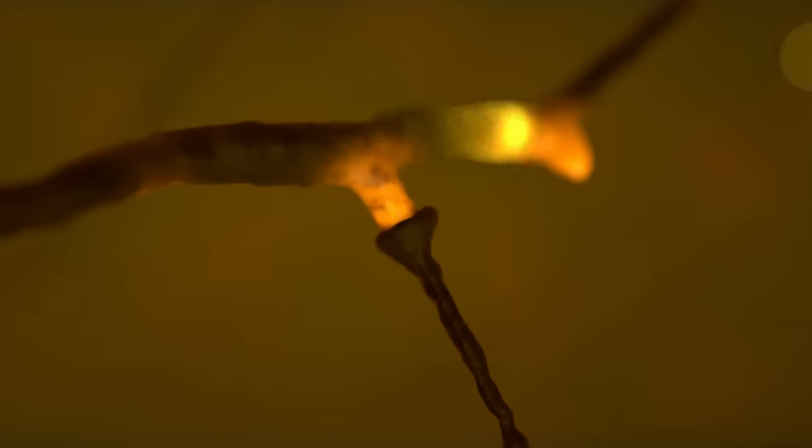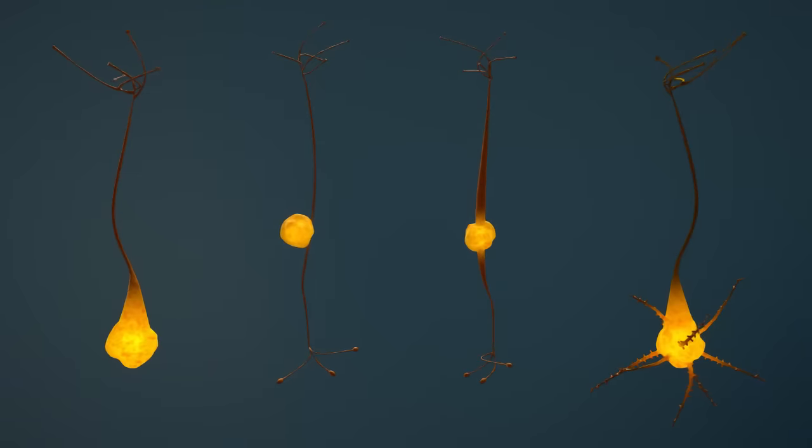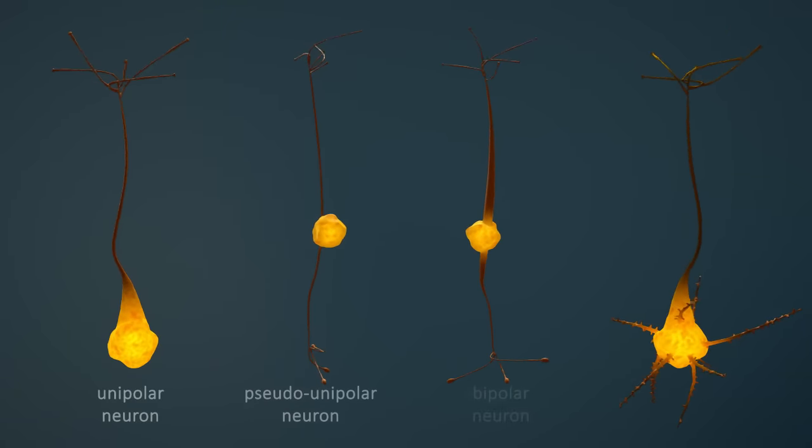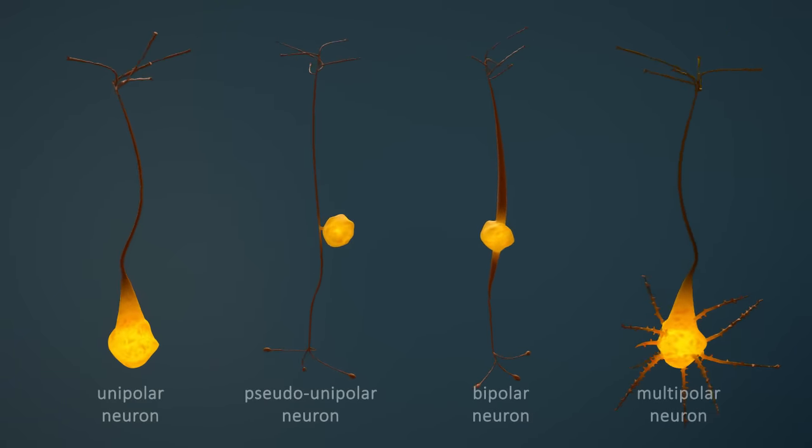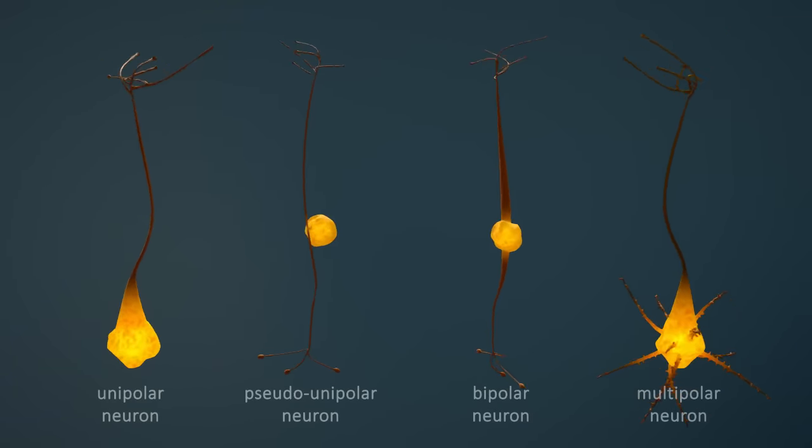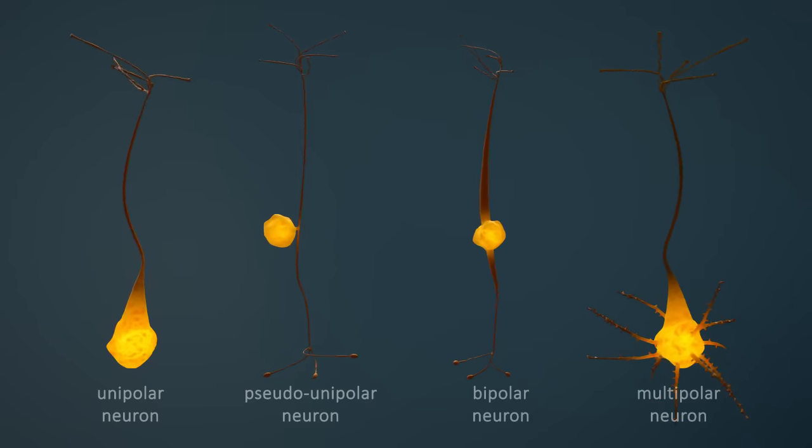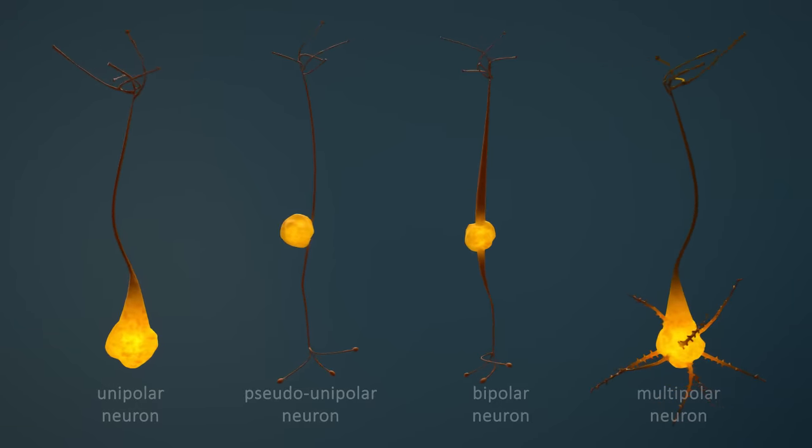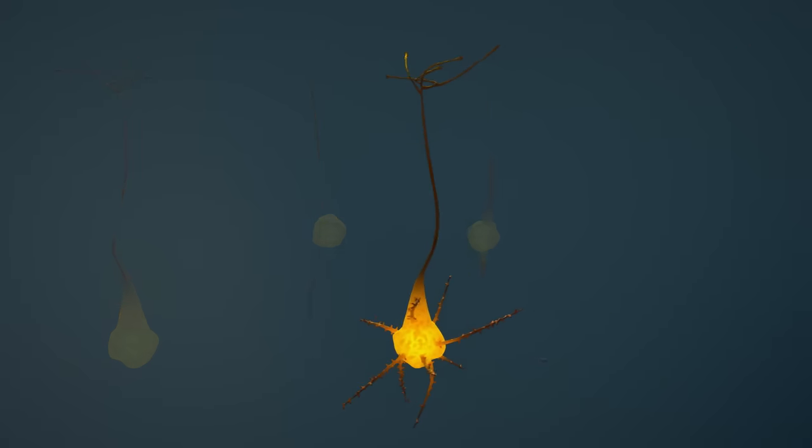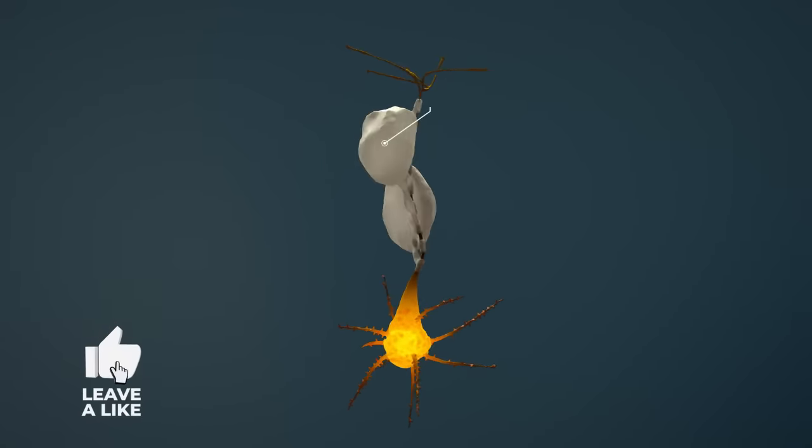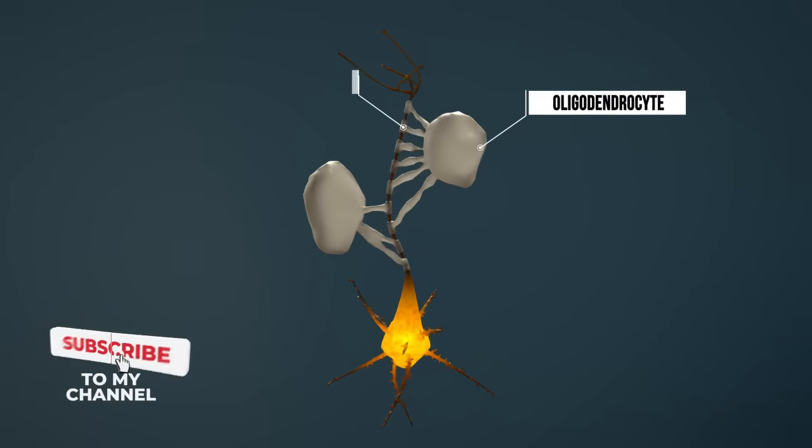Although the general structure is always the same, there are numerous forms that nerve cells can take. Nerve cells are usually divided into the type shown here. In addition, many axons in the human body are surrounded by myelin, which is formed within the brain by oligodendrocytes. This allows an impulse to be transmitted even faster.